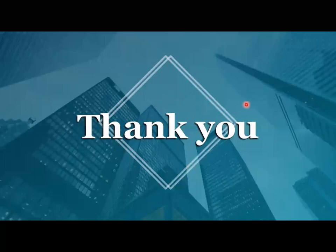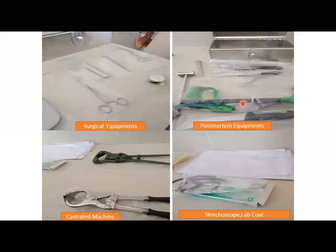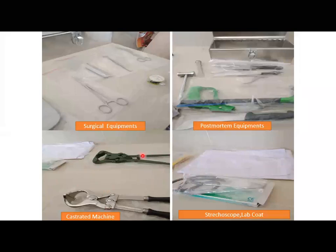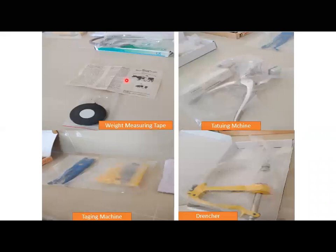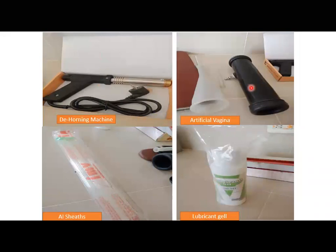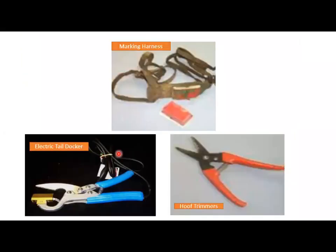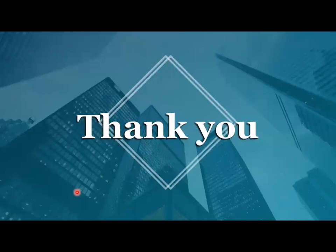To review, the tools covered include: surgical kit, post-mortem equipment, stethoscope, lab coat, castration machine for larger and smaller animals, weight measuring tape, tattooing machine, tagging machine, drencher, dehorner, artificial vagina, lubricating gel, AI sheets, hair clippers, comb cutters, shearer, nose lead, balling gun, marking harness, hoof trimmer, and electric tail docker. These are the mostly used equipment on farms.